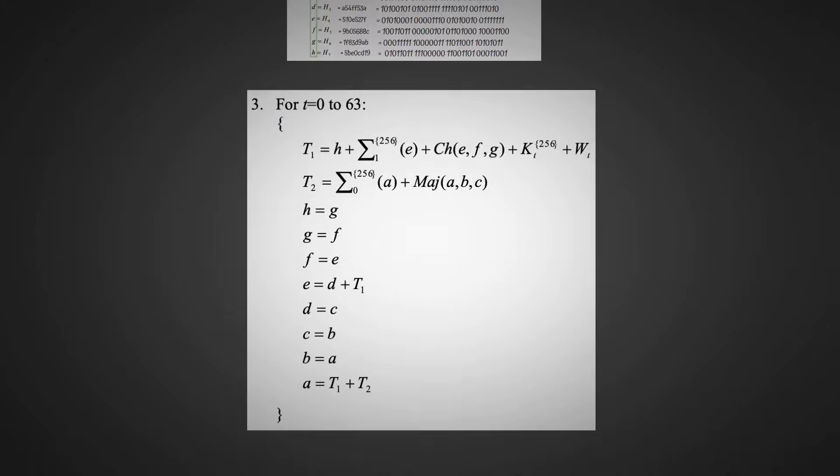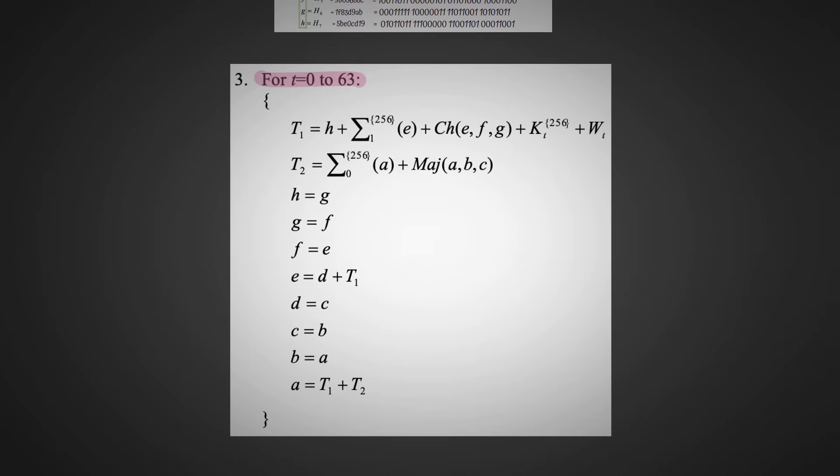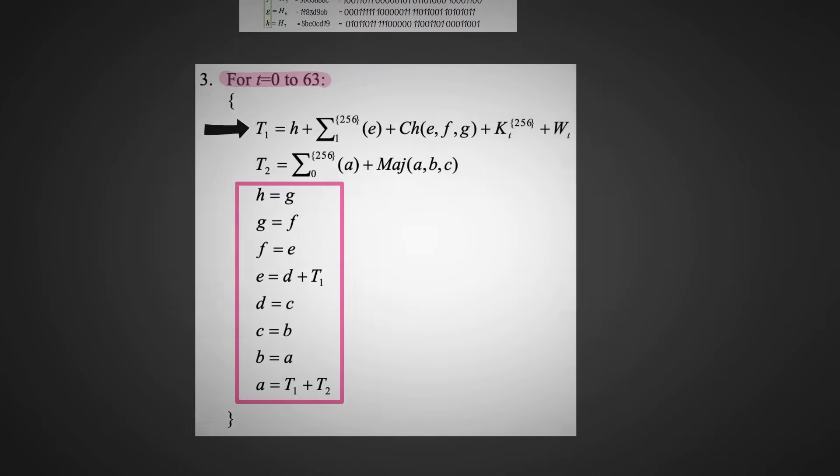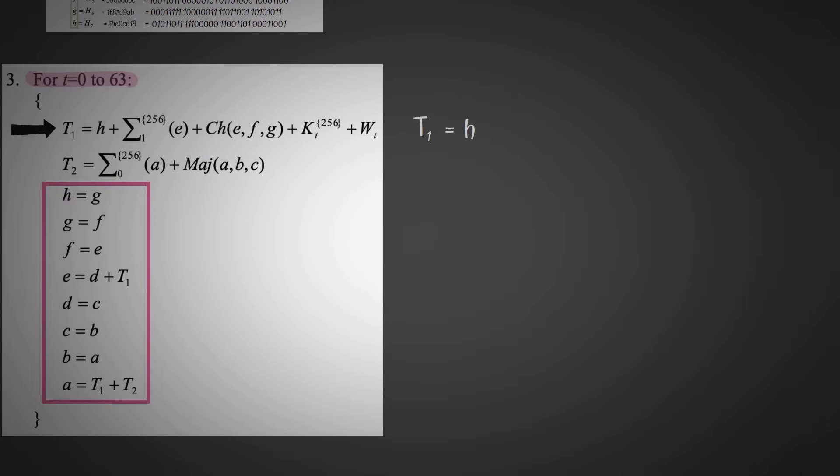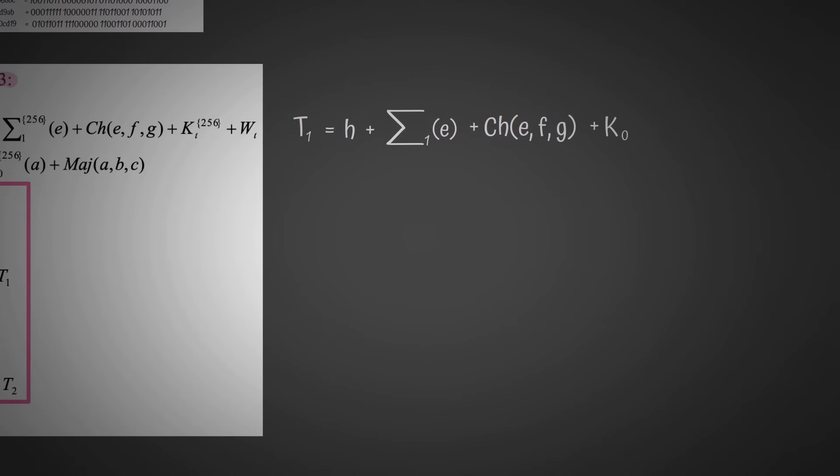Now we have a for loop which we are going to go through. These last lines here are all very straightforward, and there's no need to go through that. But these first two lines look a bit more complicated. So firstly, what is the first line? We have T1 equals H, we know what H is. Capital Sigma 1, we don't know what that is, but it's a function, and it takes E as its input, we know what E is. CH, we don't know what function that is, but we pass E, F, G through that, and we add K0, which we know what that is, and we add W0, which we know what that is.